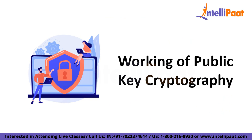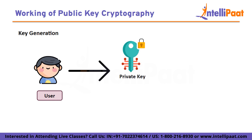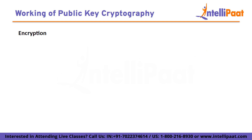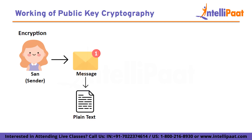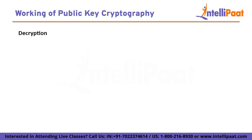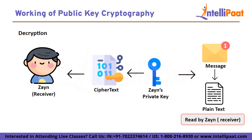The next topic is the working of public key cryptography, which involves the following steps. First, key generation: a user generates a private key and a corresponding public key. The private key remains confidential and is stored securely, whereas the public key can be communicated to their partners. Then, encryption: a sender, San, encrypts a plain text message using the recipient Zane's public key to form a cipher text. Then, decryption: Zane receives the cipher text, applies his private key, and can access the original plain text.